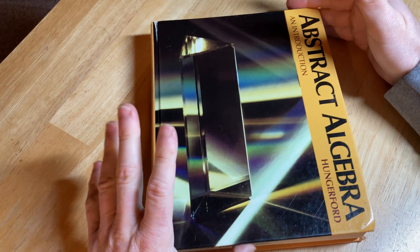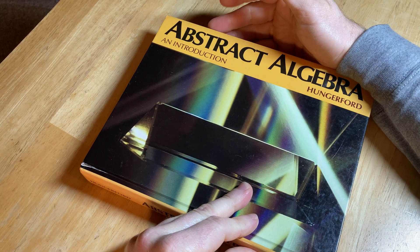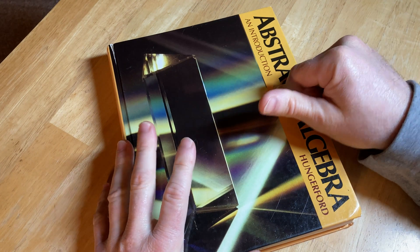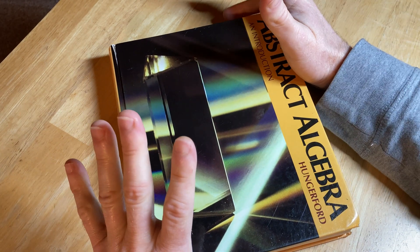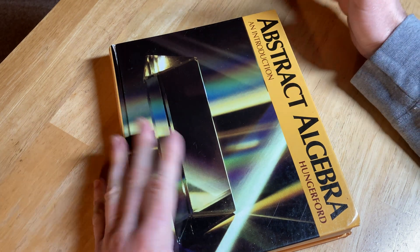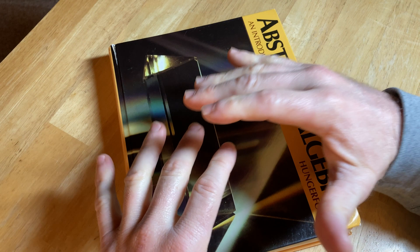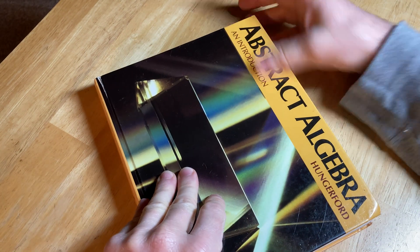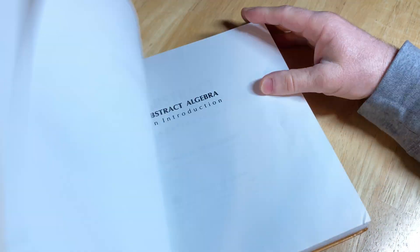This is a book by Thomas Hungerford. It's called Abstract Algebra: An Introduction. Hungerford has another book which is more advanced than this one. I also own that book and I really like that book. This one though is more for beginners. It's called Abstract Algebra: An Introduction by Hungerford.